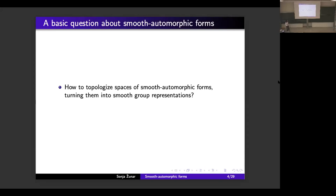Let us look at the very basic question of how to define a topology on interesting spaces of smooth automorphic forms in such a way that these spaces become smooth group representations. The existing literature on smooth automorphic forms, which is very sparse, shows that the experts have a very good intuition on how this topology should look like, but also that working with this topology involves some easy-to-miss intricacies stemming from the fact that this topology is not Fréchet. In this talk, I will tell you a bit about these intricacies and also about the relation between the classical automorphic representations and the naturally defined smooth automorphic representations.